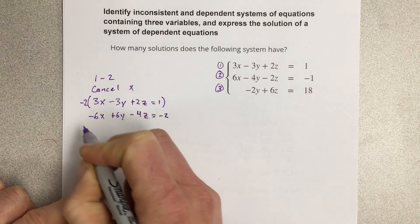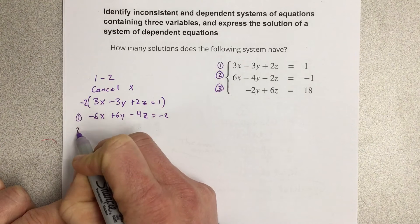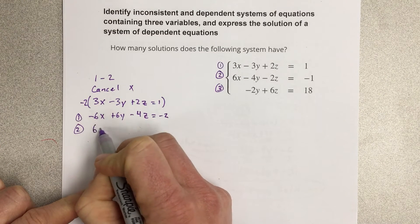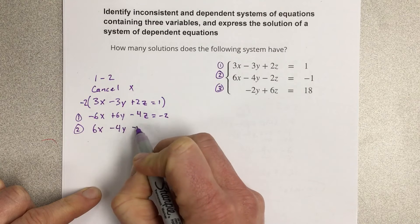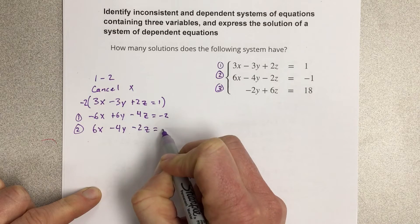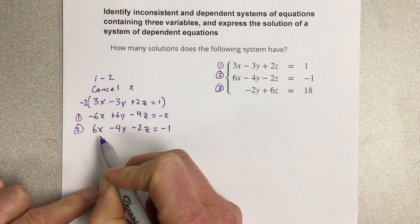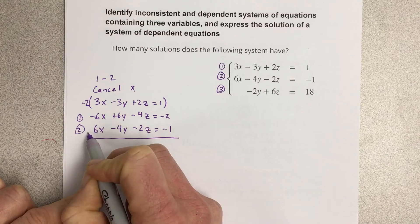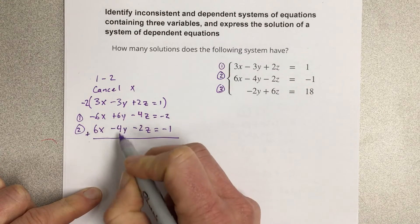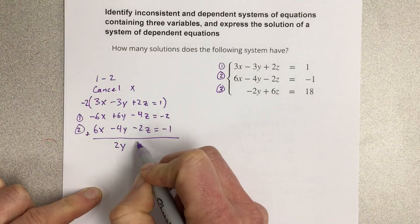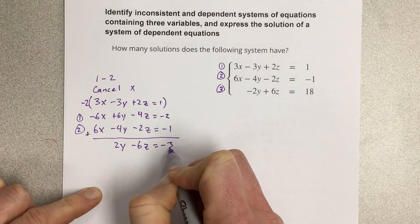I'm going to combine that with equation two. That's equation one. Let's go with equation two now. That'd be 6x minus 4y minus 2z equals negative 1. We're going to add those together. That's 2y minus 6z equals negative 3.